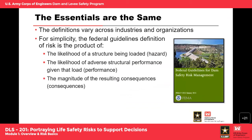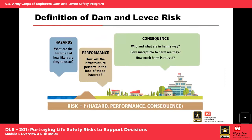Although definitions of risk vary slightly across different industries and organizations, the federal guidelines definition of risk is essentially the product of: the likelihood of a structure being loaded (the hazard), the likelihood of adverse structure performance given that the load occurs (the performance component), and the magnitude of the resulting consequences. This is essentially the risk equation, and there are lots of different ways to show what that equation looks like. If any of these components is zero or very low, then the overall risk is zero for that project.